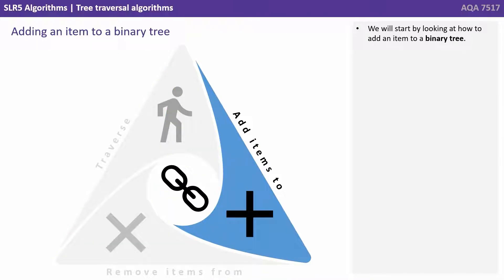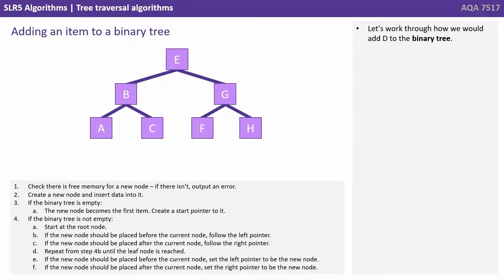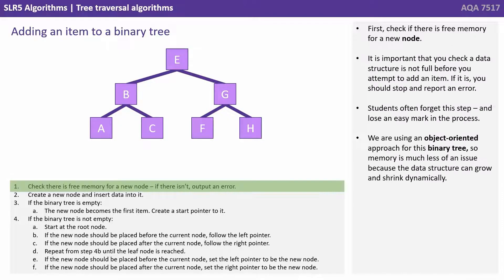We'll start by looking at how to add an item to a binary tree. Let's work through how we'd add D to the binary tree shown here. First, check if there is free memory for a new node. It's important that you check a data structure is not full before you attempt to add an item. If it is, you should stop and report an error. Students often forget this step and lose an easy mark in the process. Now we're using an object-oriented approach for this binary tree, so memory is much less of an issue because the data structure can grow and shrink dynamically.